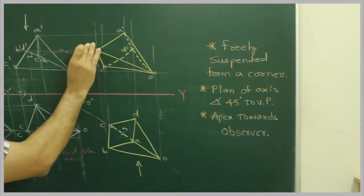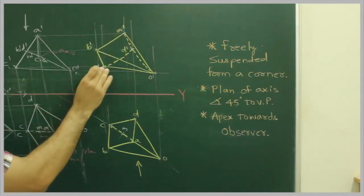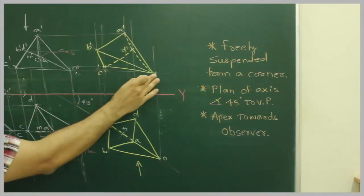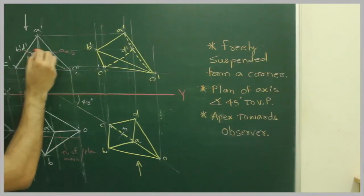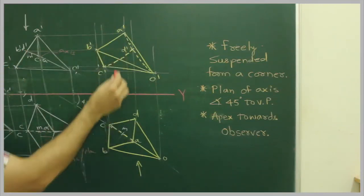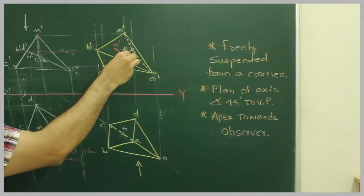This will be dark. This is D dash, D dash, C dash, O dash. You can mark point M, and D dash, O dash. This is axis.